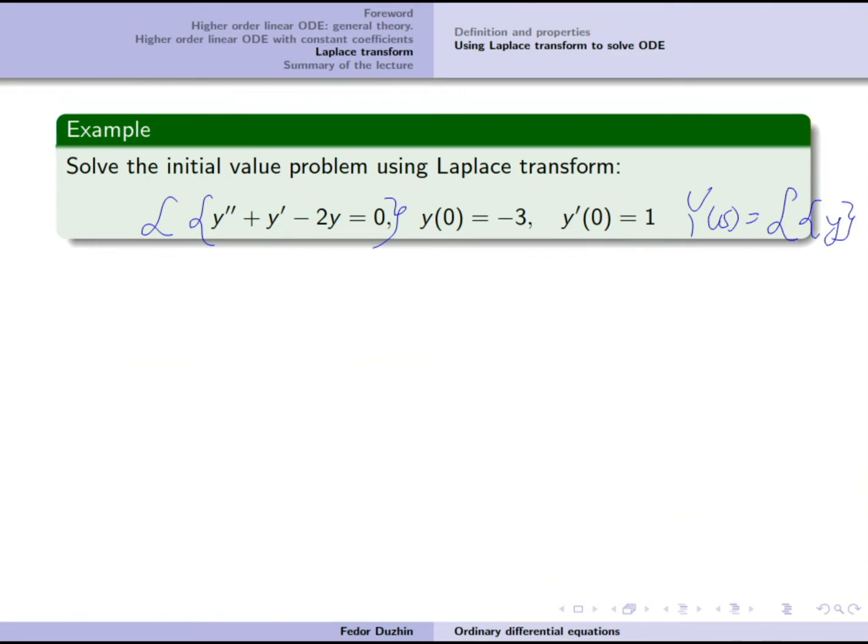When we apply the Laplace transform of y double prime, recall that the Laplace transform of the second derivative is s squared Y minus s times y(0) minus y'(0). Plus the Laplace transform of the first derivative is s times Y minus y(0), minus 2Y equals 0.